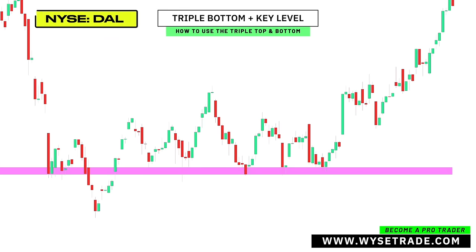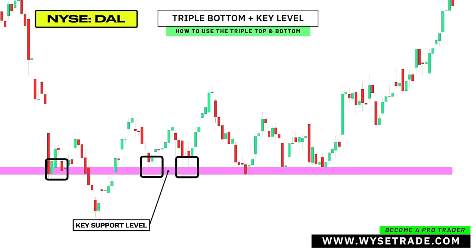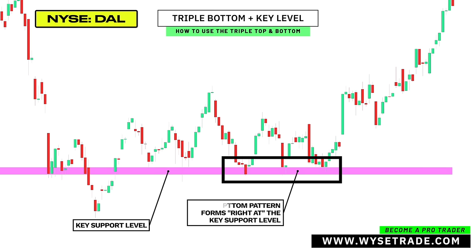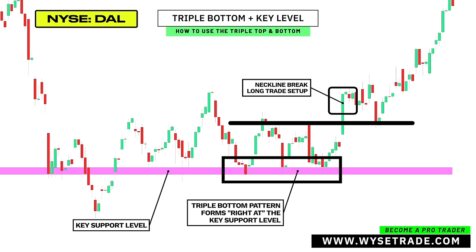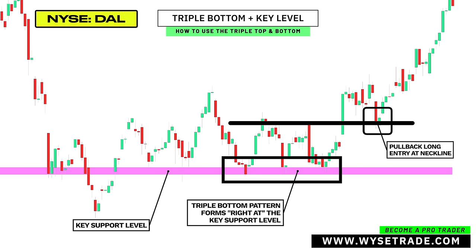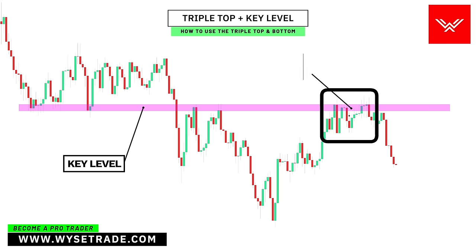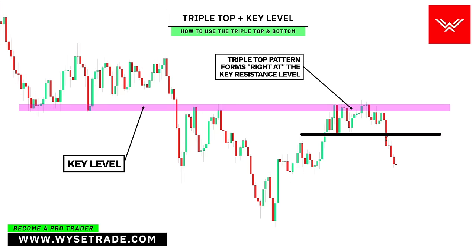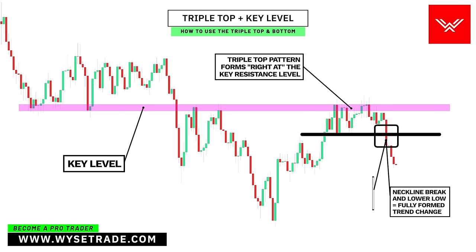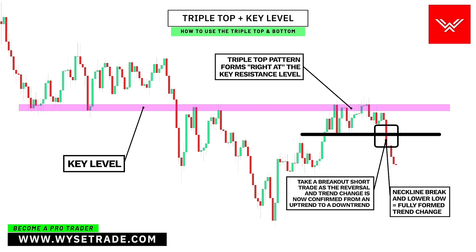This is the Delta Airlines stock. These reversal points here give you your key level. As price comes back down, you add your triple bottom pattern. Neckline here, and once price breaks the neckline, either take the breakout entry, or if you're a more secure trader, you'd wait and see if there was a pullback entry, which you had right here. These reversal points here give you your key level. As price comes back up, you add your triple top pattern. Neckline here, and once it breaks, the reversal is confirmed, and it's when you would look for short entries.